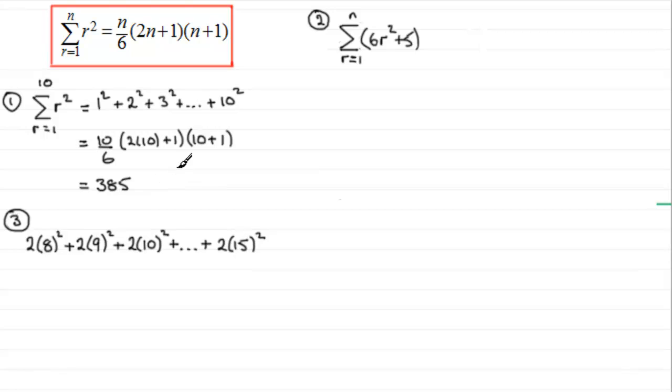Now for question 2, let's just come down here. For question 2, what I've got is a combination now of terms where we've got one term in r squared, and then we've got this constant on the end.